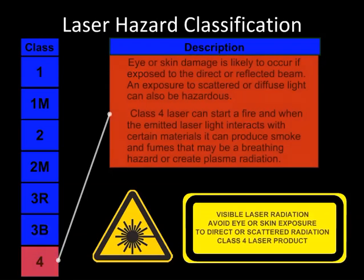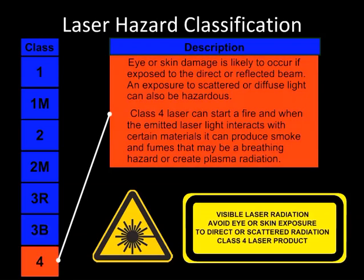Class 4: Eye or skin damage is likely to occur if exposed to the direct or reflected beam, and exposure to scattered light can also be hazardous. Class 4 laser light can start fires. And when the emitted laser light interacts with certain materials, it can produce smoke and fumes that may be a breathing hazard. In some cases, it can even create plasma radiation.